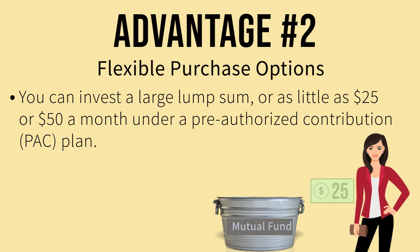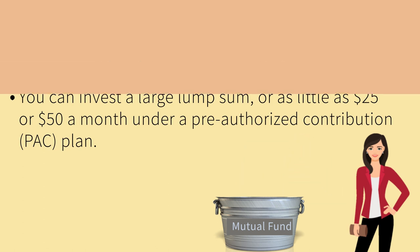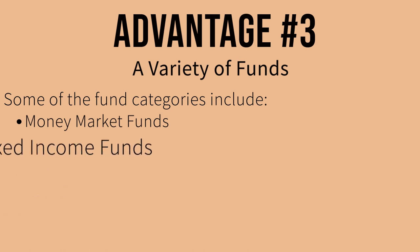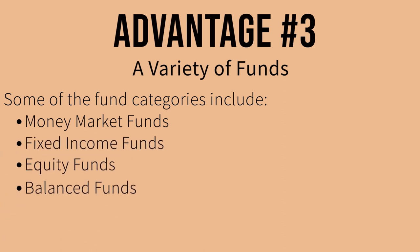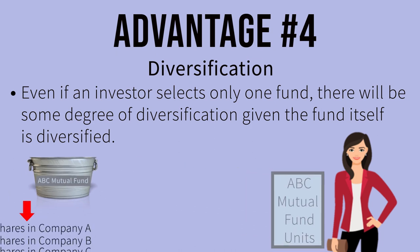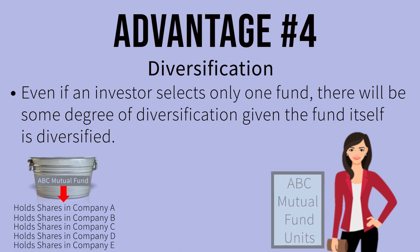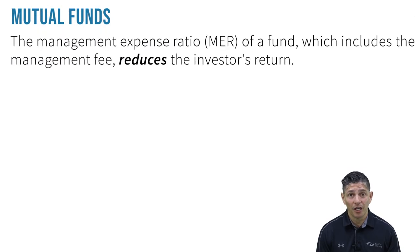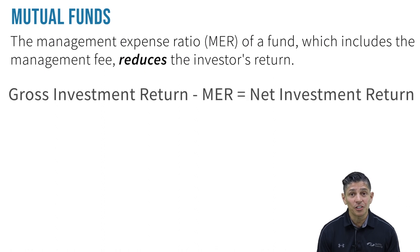Number two, flexible purchase options — you can invest a large lump sum or as little as $25 or $50 per month under a pre-authorized contribution plan. Number three, a variety of funds — some of the fund categories include money market funds, fixed income funds, equity funds, balanced funds, specialty funds, etc. And number four, even if an investor selects only one fund, there will be some degree of diversification given the fund itself is diversified.